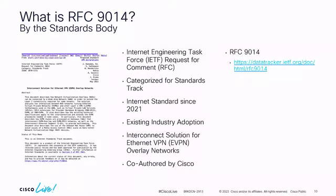What is multi-site? We need a layer 2 data center interconnect and a layer 3 data center interconnect. Max always says DCI is dead because we want to make it part of the fabric itself so you can just structurally extend segments as needed. All the way back, we started building what was called the DCI EVPN overlay draft to interconnect multiple EVPN islands with different interconnectivity.